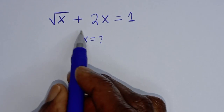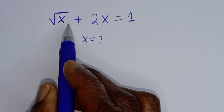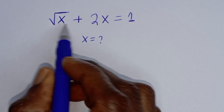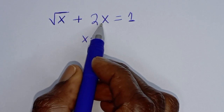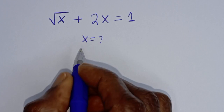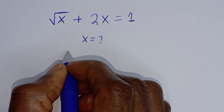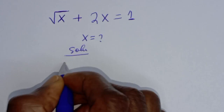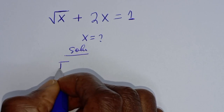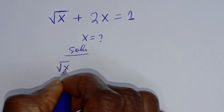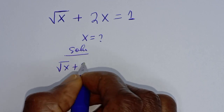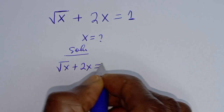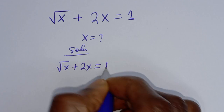Hello, how to solve for s from this given smart problem: square root of s plus 2s is equal to 1.